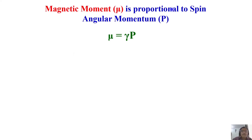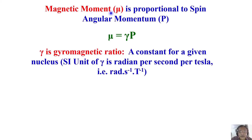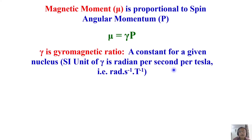The magnetic moment mu is proportional to angular momentum P, and the proportionality constant is given by a term called gamma — the gyromagnetic ratio. Gamma is constant for a given nucleus and has units of radians per second per Tesla in the SI system. So the magnetic moment is proportional to spin angular momentum by the proportionality constant gamma.